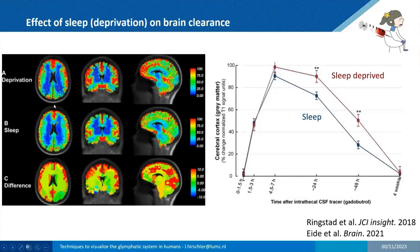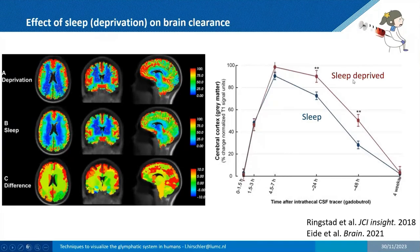They also performed a sleep deprivation study. Essentially, the tracer enters the CSF of the brain and can be imaged at different time points. Interestingly, they showed that if you are sleep deprived, more gadolinium remains in the brain, suggesting that sleep has an effect on tracer clearance — and by extension, potentially on waste clearance as well.